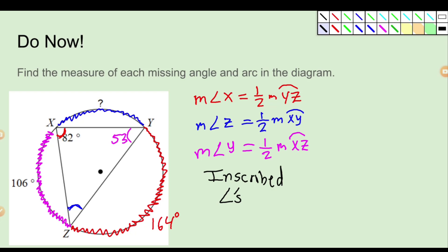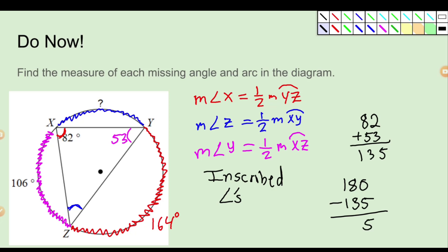I'm going to use triangle sum. We should know that the three angles in a triangle need to add up to 180. So 82 plus 53 is 135, and 180 minus 135 gives me 45. So this angle here is 45 degrees — because the sum of interior angles of a triangle is 180. And now if you want to know what the measure of that arc is, just double that number, and that's 90 degrees.